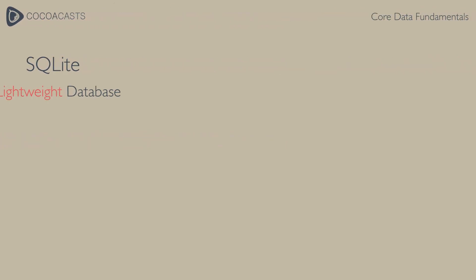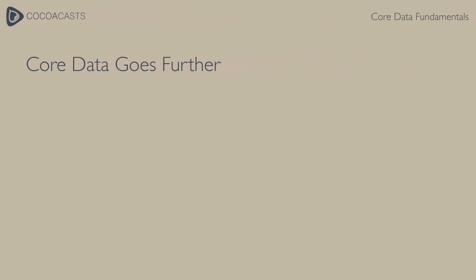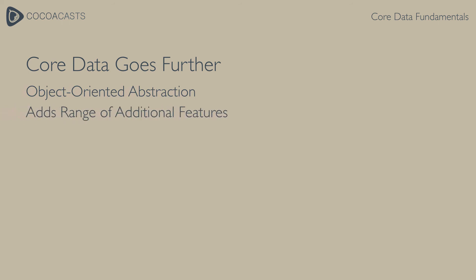SQLite is a lightweight database that is incredibly performant and a good fit for mobile applications. Even though SQLite is advertised as a relational database, it is important to realize that the developer is in charge of maintaining the relationships between the records in the database. CoreData goes much further — it provides an abstraction that allows developers to interact with a model layer in an object-oriented manner. Every record you interact with is an object, and CoreData is responsible for the integrity of the object graph, ensuring the object graph is kept up to date.